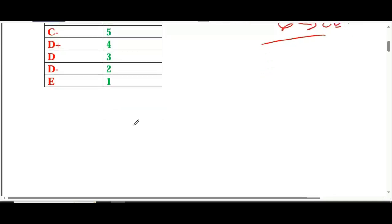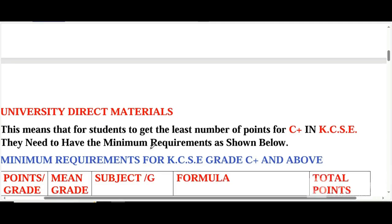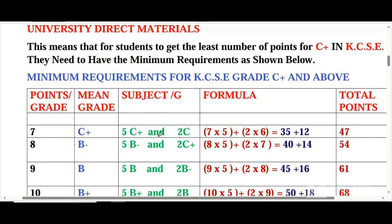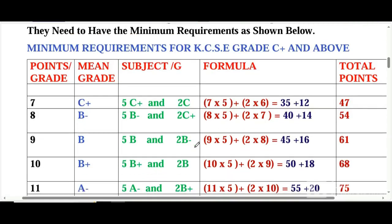If you want to get a grade to the university, you need to ensure you have the minimum requirement. For you to get a C plus and above, you must ensure that out of the seven subjects used for grading, you have five C plus grades. Seven subjects are used for grading, so out of the seven, make sure you have five C plus.